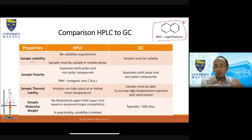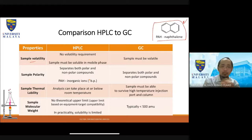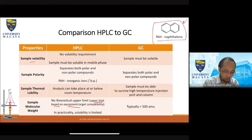Regarding sample molecular weight, for GC you can normally analyze samples with less than 500 amu or daltons. The larger the molecular weight, the higher the boiling point, which reduces volatility. High boiling point means it's not as volatile as a lower boiling point sample. For HPLC, theoretically there is no upper limit — the upper limit is only based on equipment and column compatibility.